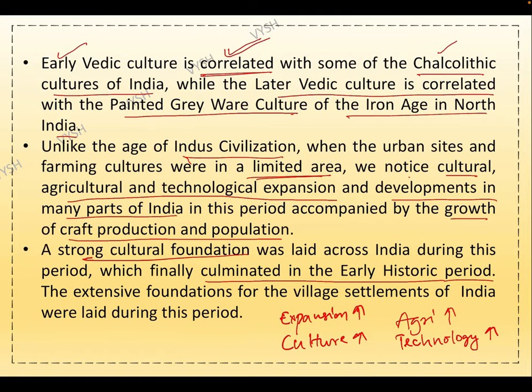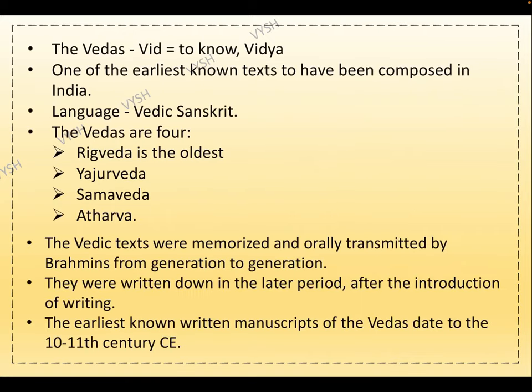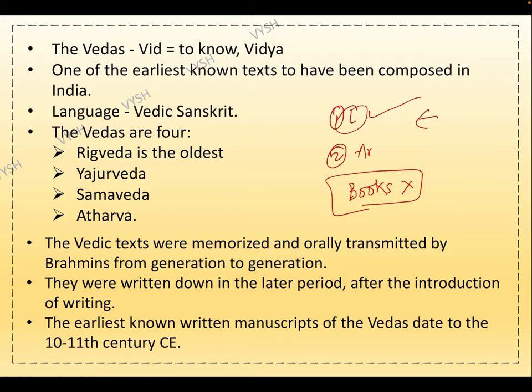Now we will see about the literature of the Vedic age. There are two sources: literature and archaeology. At this point of time, we have not found any books or texts related to that era. The Vedic material was transmitted from one generation to another orally — the shlokas and texts were recited, memorized properly, and passed through generations by word of mouth.